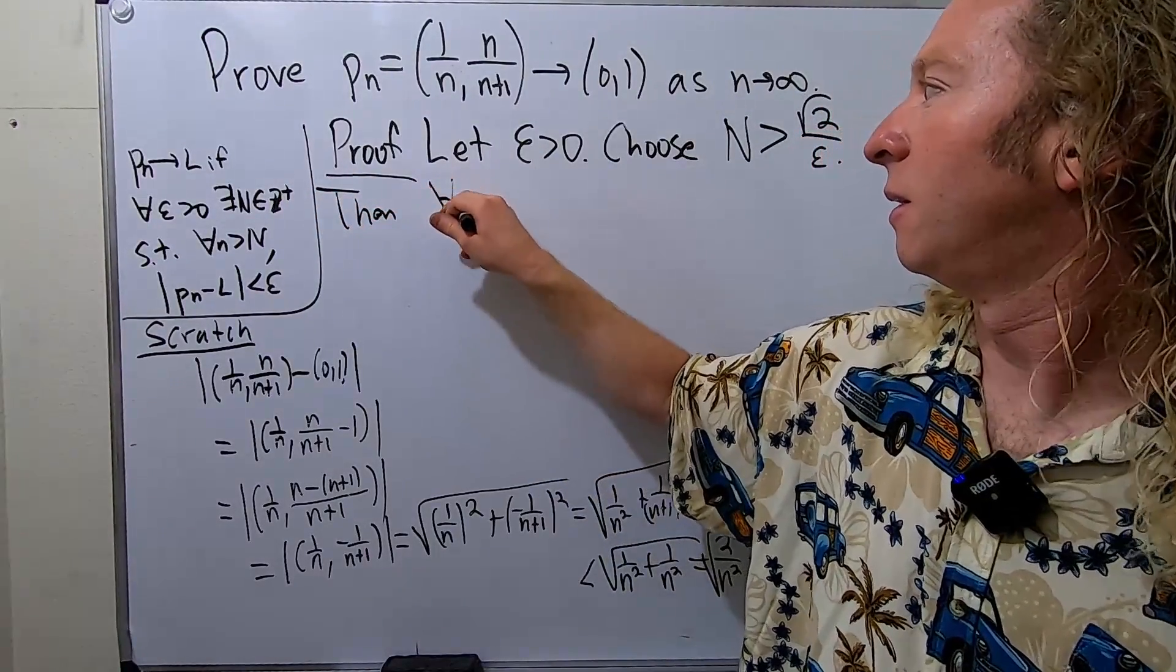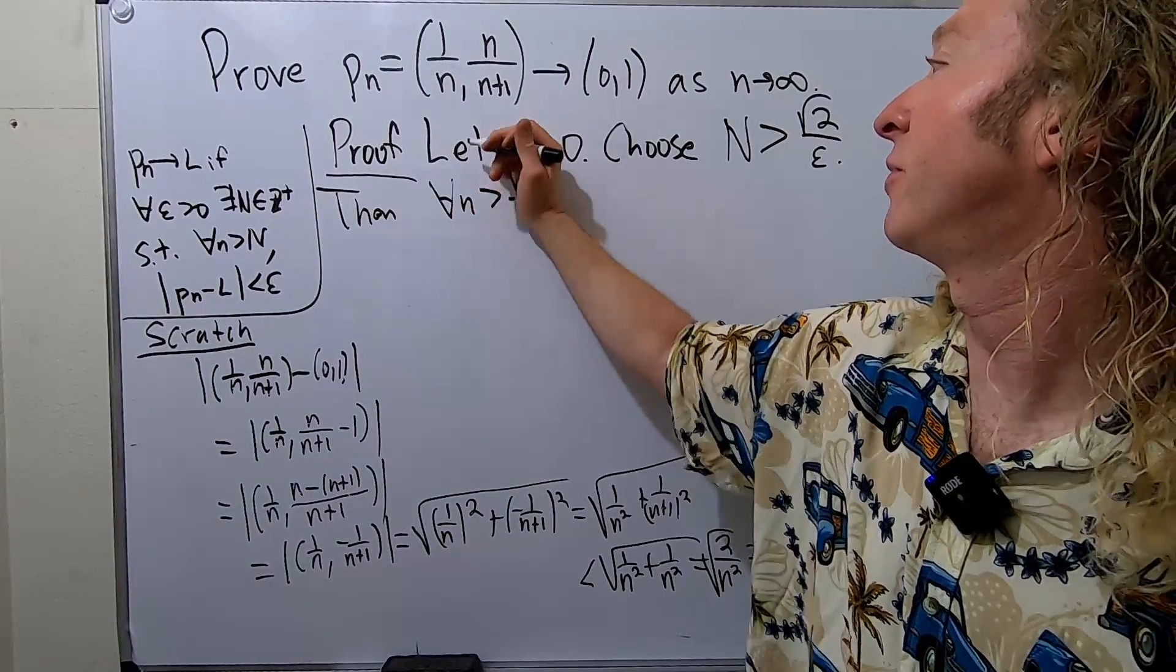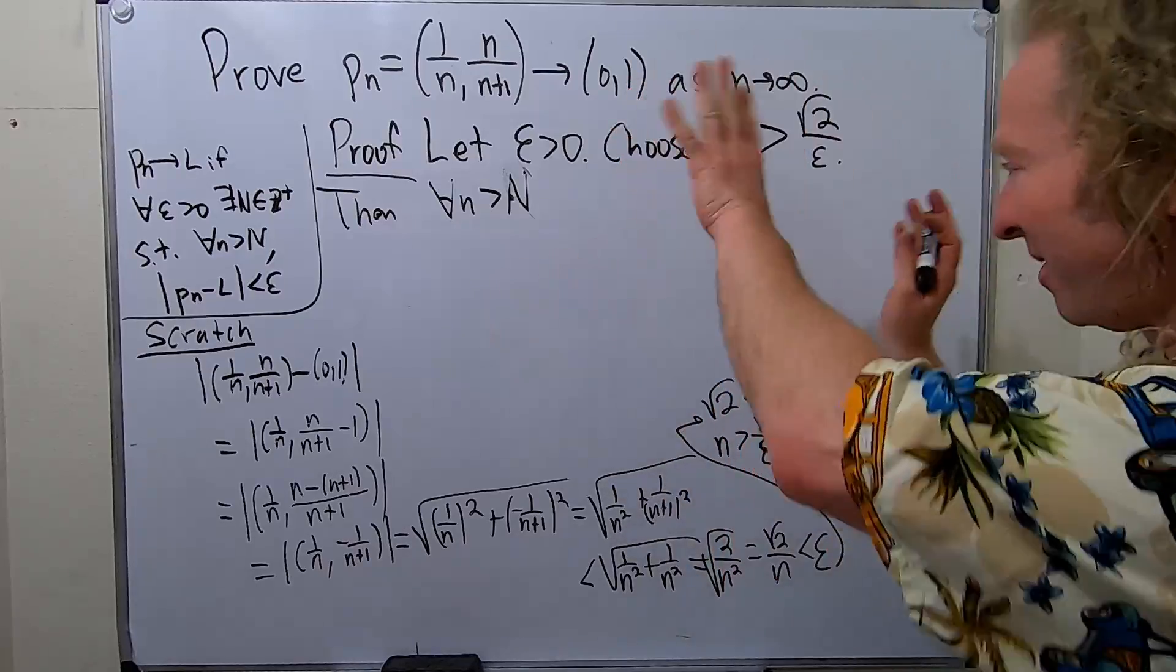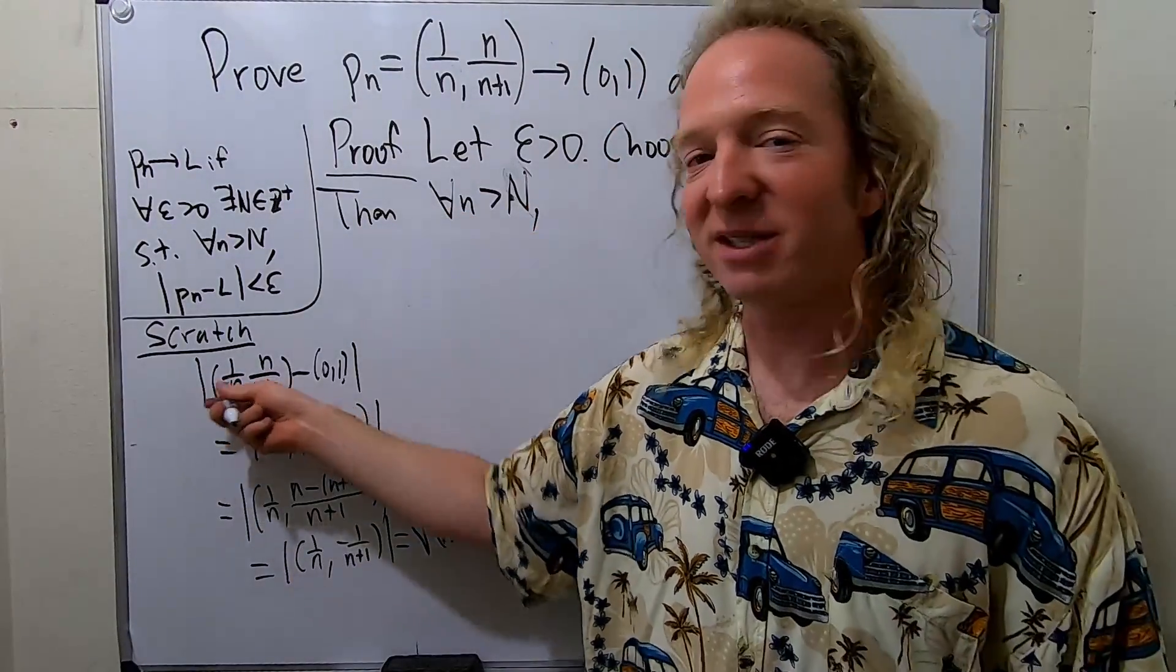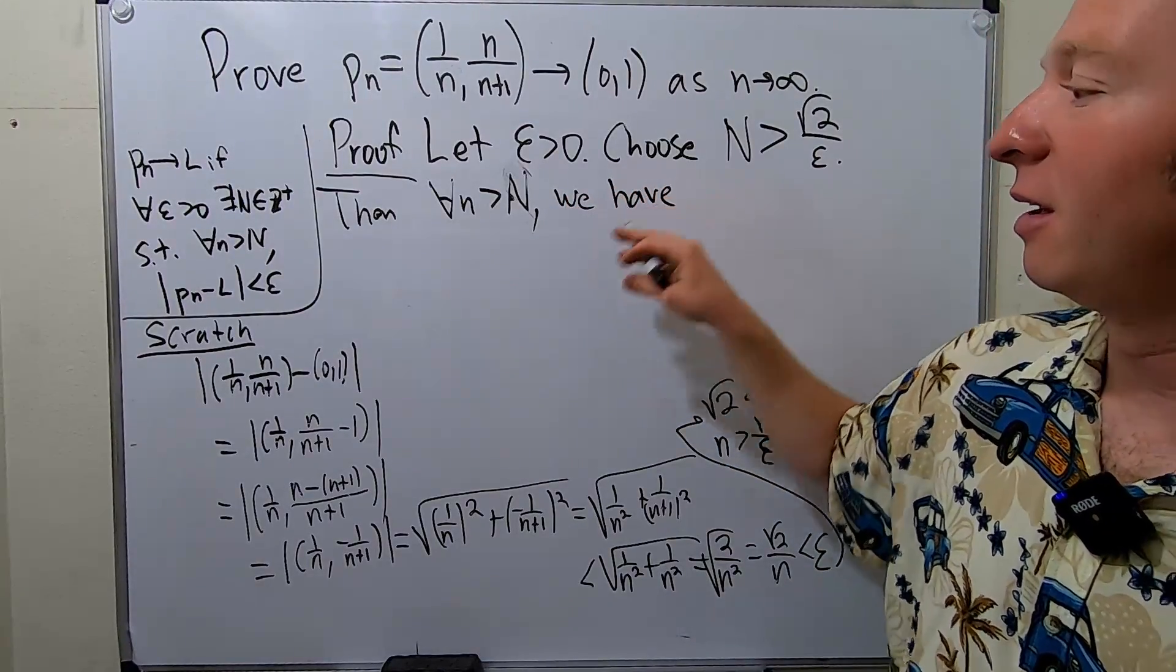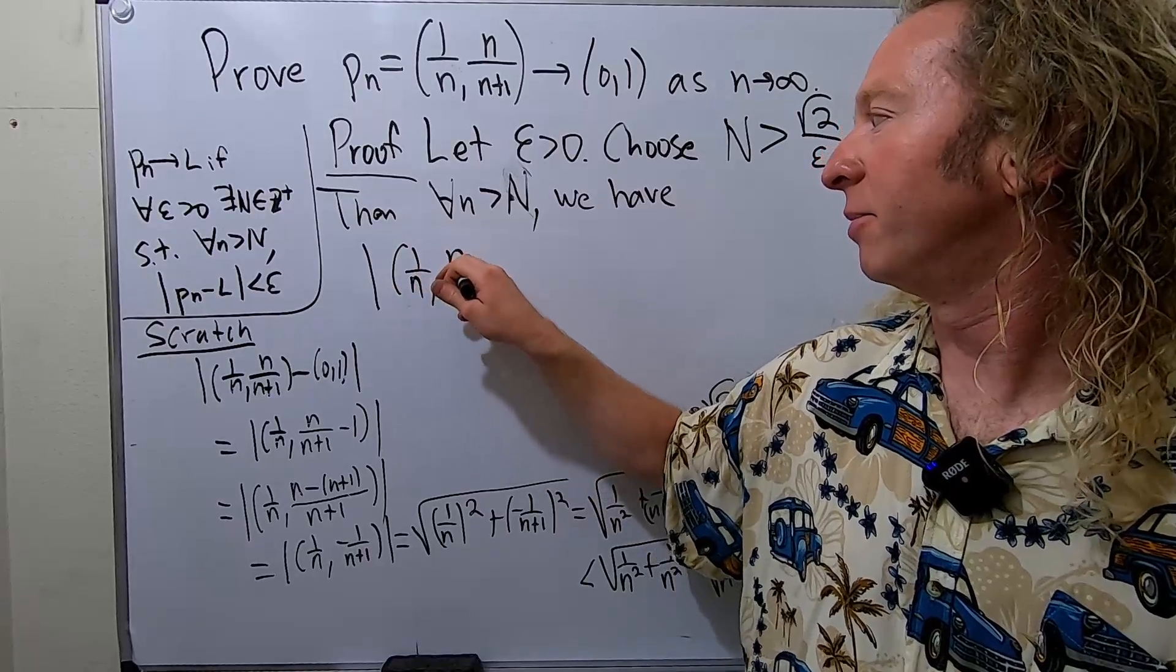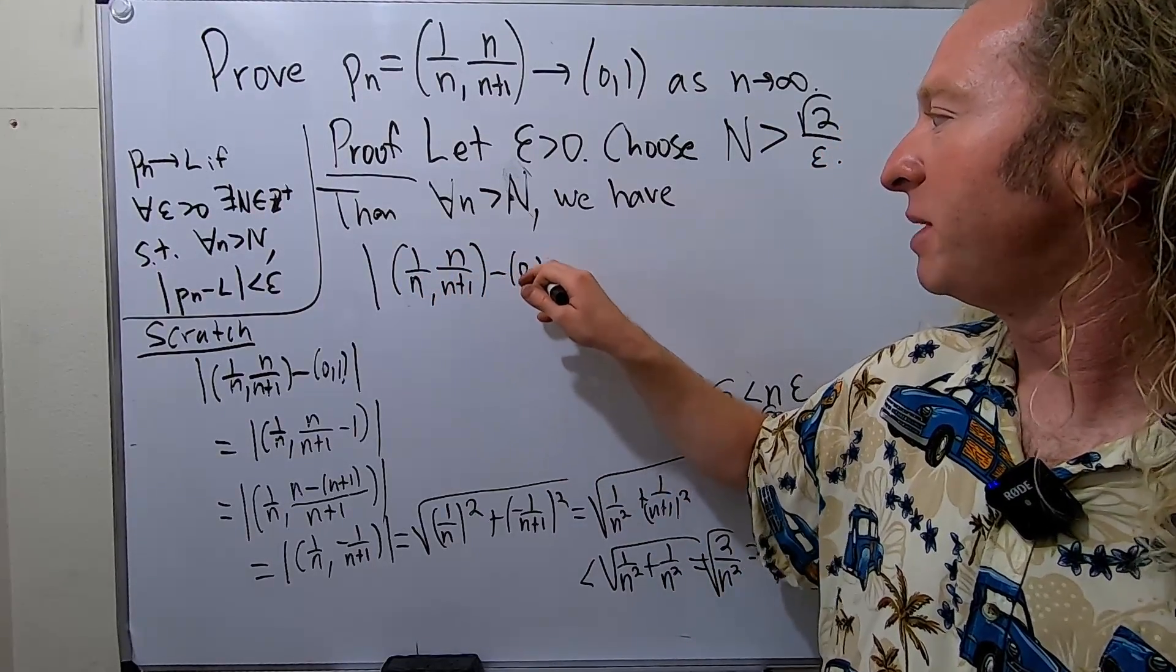Then for all little n bigger than capital N, which is bigger than the square root of 2 over epsilon. So for all little n bigger than capital N we're going to look at this distance here. We have the magnitude of (1/n, n/(n+1)) minus (0,1). We're basically doing the same thing again.